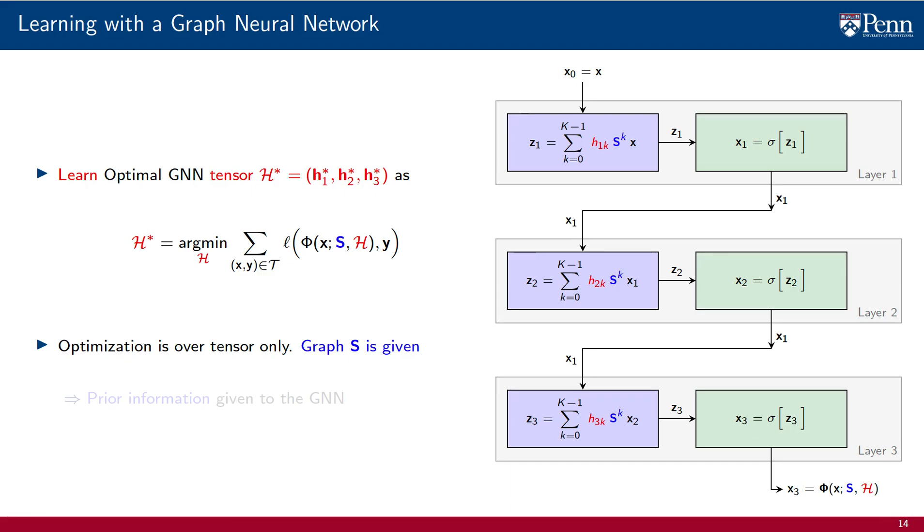As was also the case of learning with a perceptron and a graph filter, the graph shift operator S is given. It is not part of the optimization space. The shift operator is interpreted as prior information that is given to the GNN for leverage.